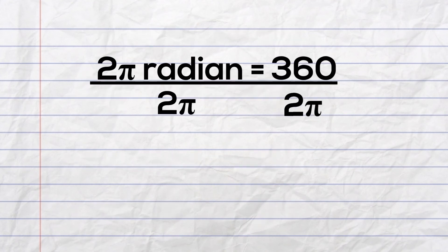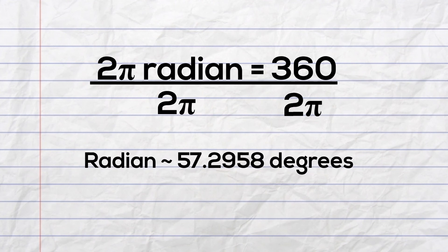We can find the measure of a radian by dividing both sides by 2π. When you do this, it equals approximately 57.2958.